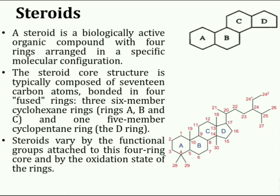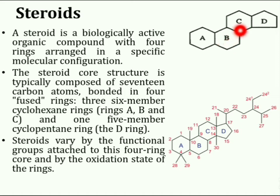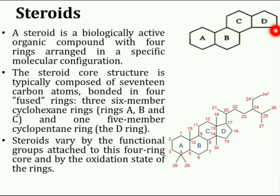A steroid is a biologically active organic compound with four fused rings arranged in a specific molecular configuration. These rings are designated as A, B, C, and D. Combined, these rings are composed of 17 carbon atoms.